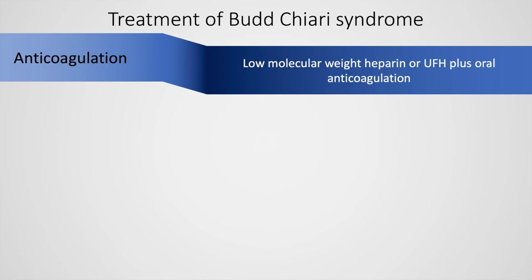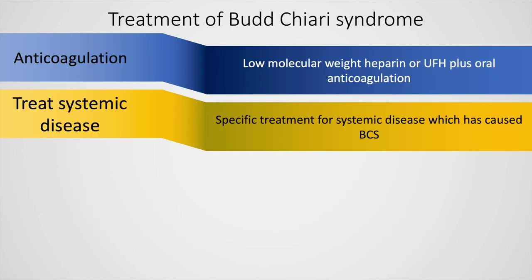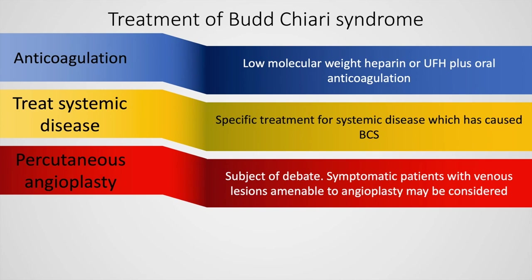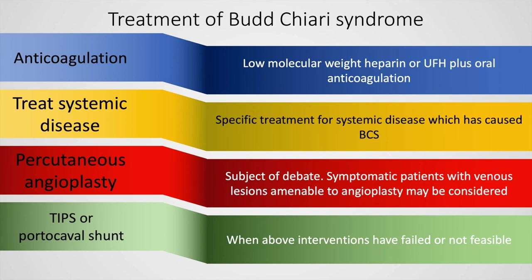The treatment of Budd-Chiari syndrome consists of anticoagulation with low molecular weight heparin or unfractionated heparin along with oral anticoagulation. It is also important to treat the underlying systemic disease. Percutaneous angioplasty is a subject of debate, and symptomatic patients with venous lesions amenable to angioplasty may be considered for this intervention. When these interventions have failed, the patient can be considered for a TIPS procedure or a portocaval shunt.